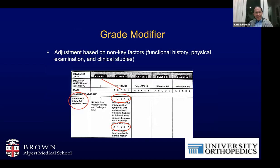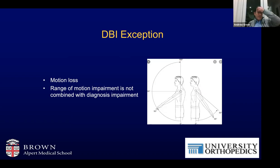These ratings are adjusted up or down by considering various modifiers including functional history, physical examination, and clinical studies, so you can make adjustments within these classes. For example, the grid for rotator cuff injury and full thickness tear is considered a class one diagnosis, with a maximum impairment of 13%. However, there are exceptions: you can assess impairment with motion loss, which is sometimes relevant with a rotator cuff disorder who has significant limitations. When using range of motion, it's called a standalone — meaning the range of motion impairment is not combined with a diagnosis impairment; you would use range of motion assessment instead.